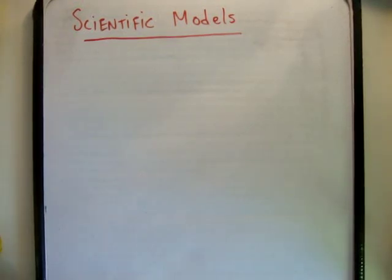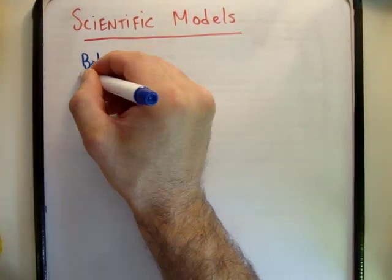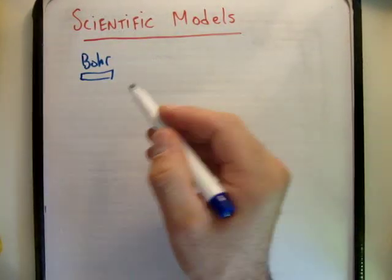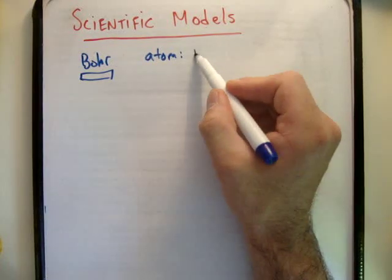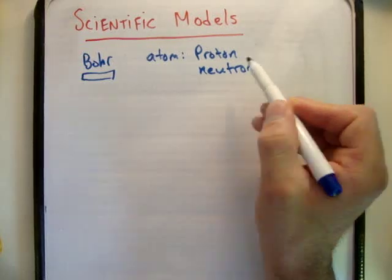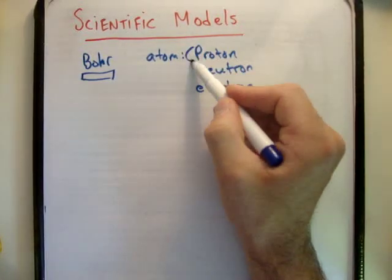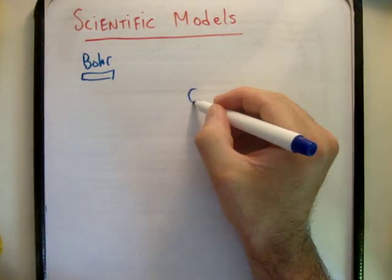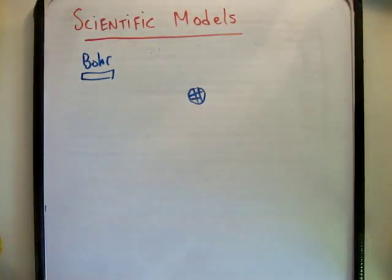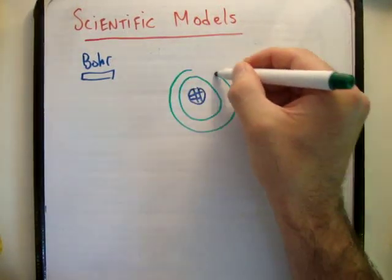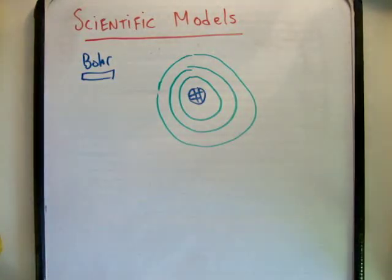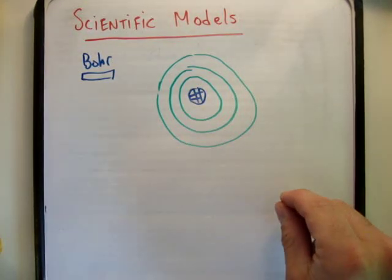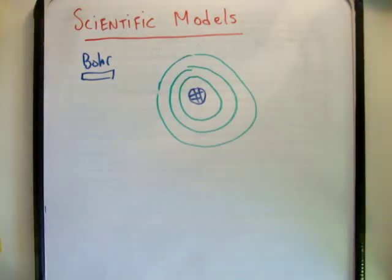We didn't know how atoms worked, so a man called Niels Bohr was trying to explain the behavior of electrons. An atom is composed of three particles: the proton, the neutron, and the electron. The proposal at the time was that you had a spherical nucleus with all your protons and neutrons, and around your spherical nucleus you had electrons orbiting it in different energy level orbits — similar or analogous to the planets orbiting the Sun. Most of the mass of our solar system is in the Sun, then massive gaps, then the orbit of a planet.